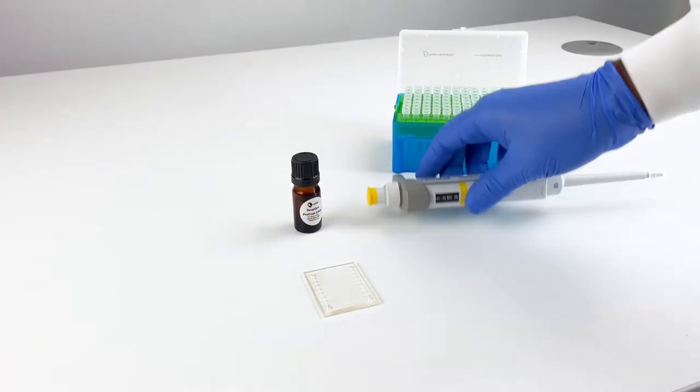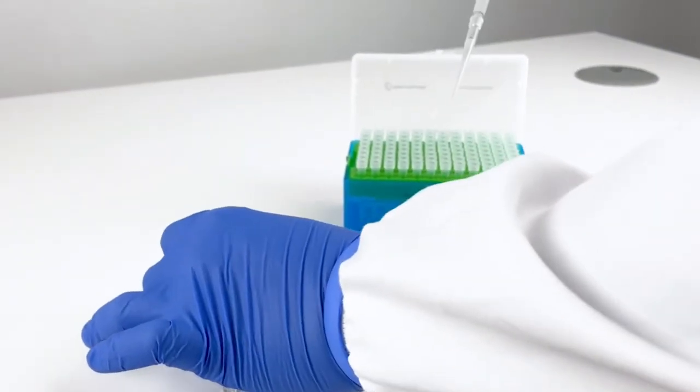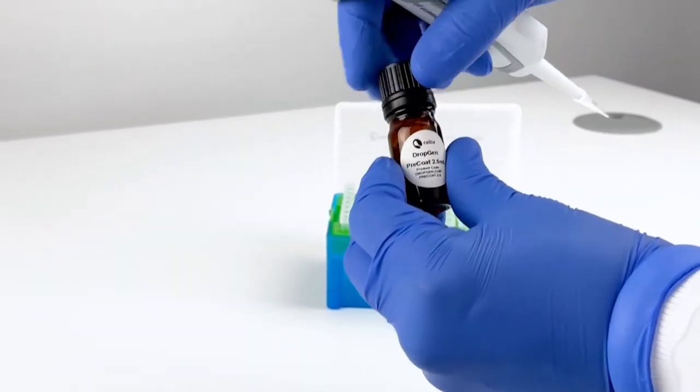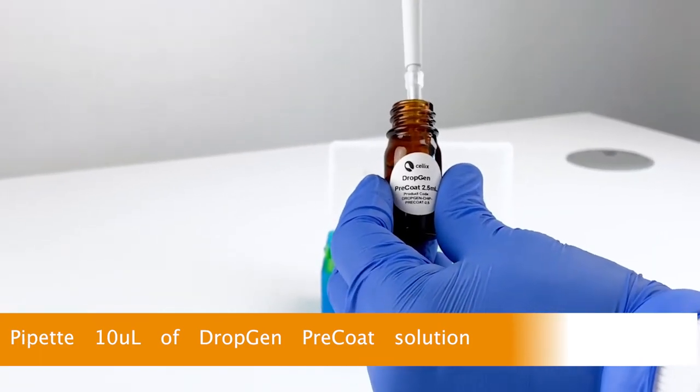How to pre-coat the drop chip? For droplet generation experiments there is no need to pre-coat the flow splitter, only the droplet generator. In this example we pre-coat the first droplet generator.